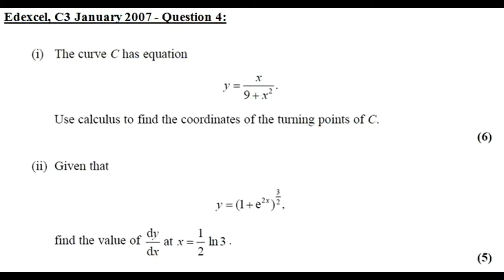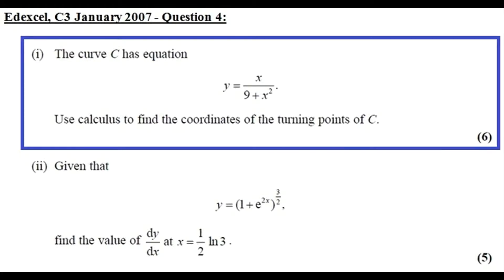Hi there, in this video I'm going to do a past exam question on differentiation. So let's take a look at this question — question 4, part 1. The curve C has equation y equals x divided by 9 plus x squared. We need to use calculus to find the coordinates of the turning points of C.